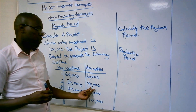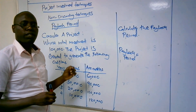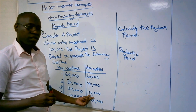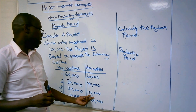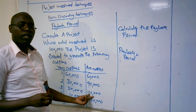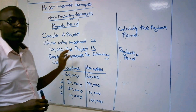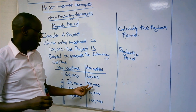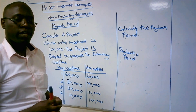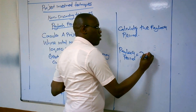In year two, you recover $90,000. Note that you should not take the year that surpasses the initial investment. If you take year three, the accumulated cash flow is $110,000, which surpasses the initial investment of $100,000. So we take year two, where we recover almost the whole amount.